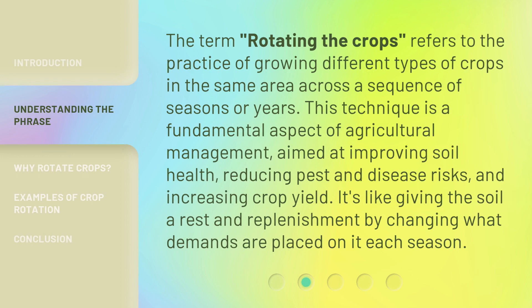The term 'rotating the crops' refers to the practice of growing different types of crops in the same area across a sequence of seasons or years. This technique is a fundamental aspect of agricultural management, aimed at improving soil health, reducing pest and disease risks, and increasing crop yield. It's like giving the soil a rest and replenishment by changing what demands are placed on it each season.